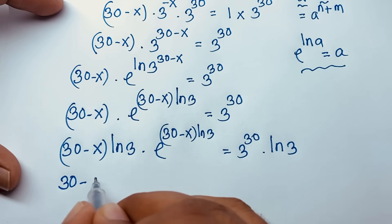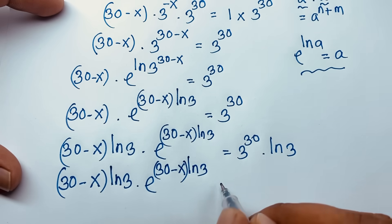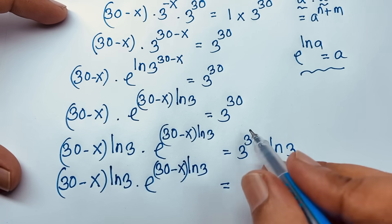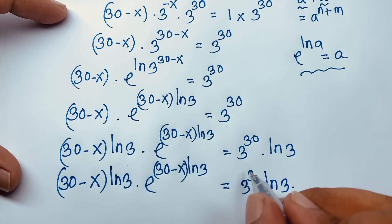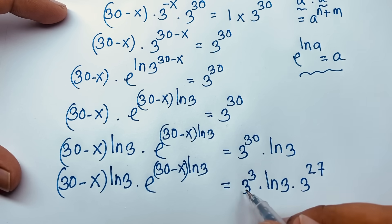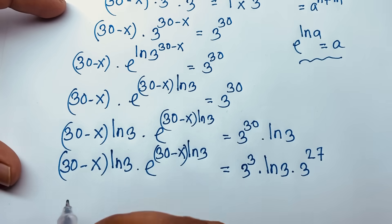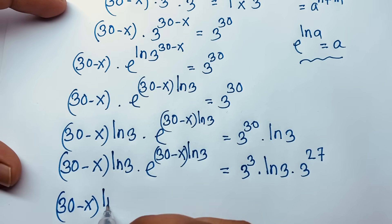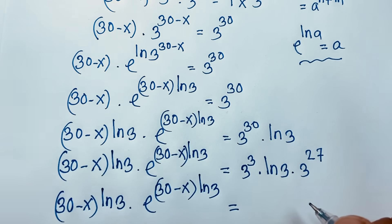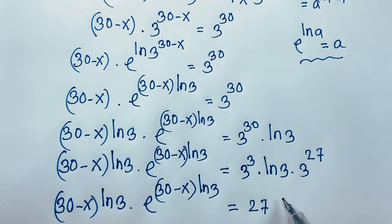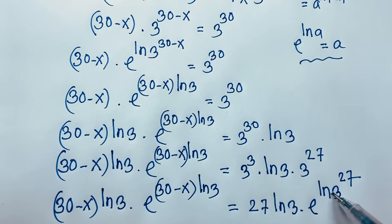So now we have: (30 minus x) times ln 3 times e to the power (30 minus x) times ln 3 equals 3 to the power 30 times ln 3. I need to rewrite the right-hand side. Since 3 to the power 30 equals 3 to the power 3 times 3 to the power 27, and 3 plus 27 equals 30, I can write the right side as 27 times ln 3 times e to the power (27 times ln 3), again applying e to the power ln a equals a.